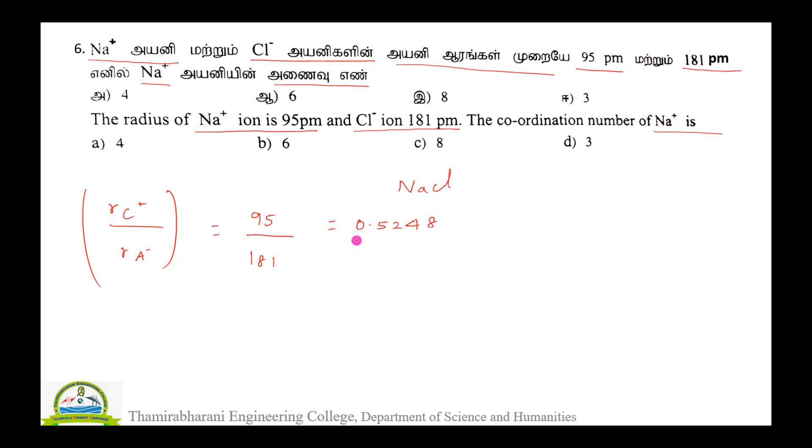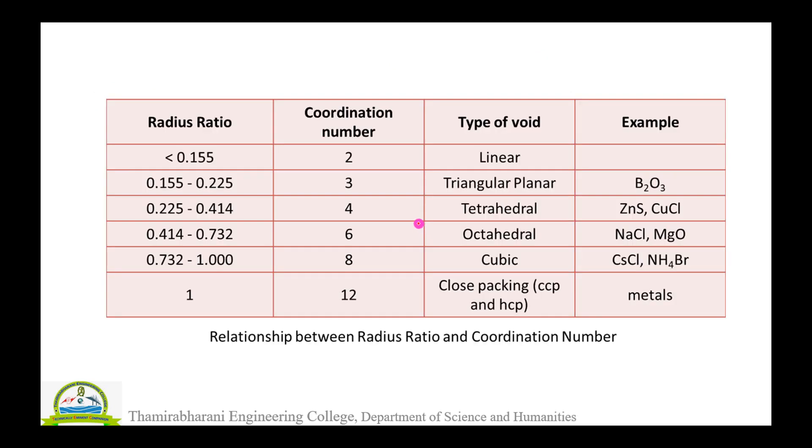Now, radius ratio, how to calculate coordination number? 0.5248. Between 0.414 and 0.732, we get 0.5248.